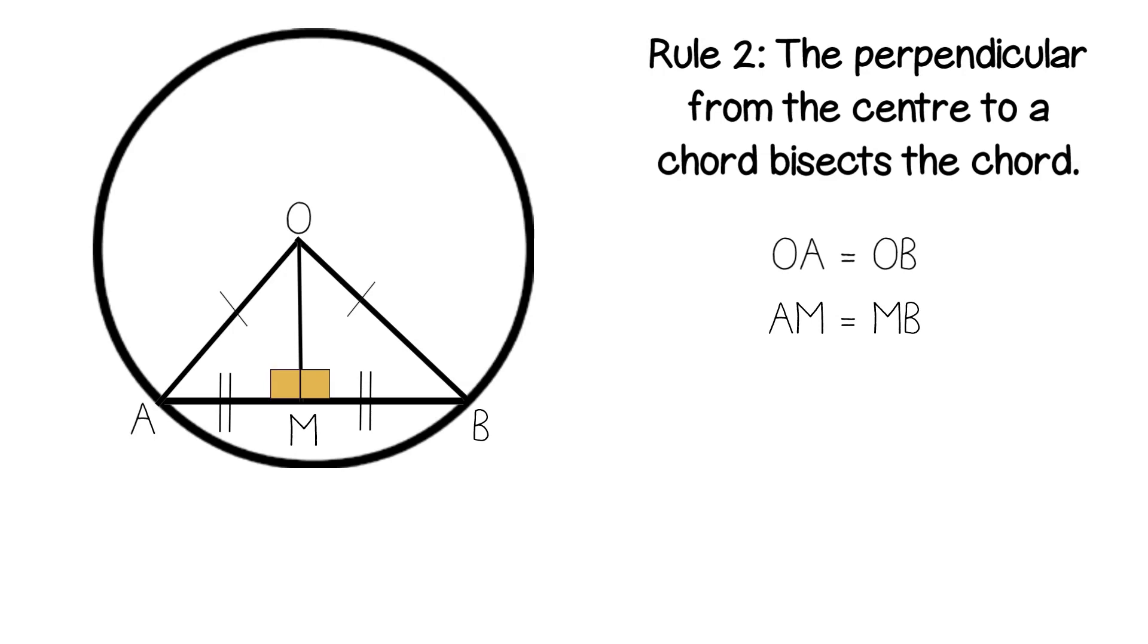So a few points from this. O to A and O to B are the same because they're radii. A to M and M to B are the same because M is the midpoint. Angle OMA is 90 degrees and angle OMB is 90.